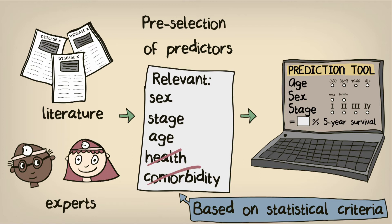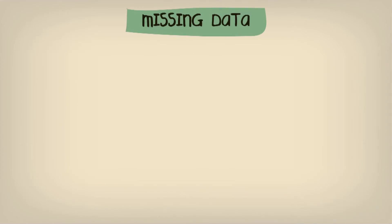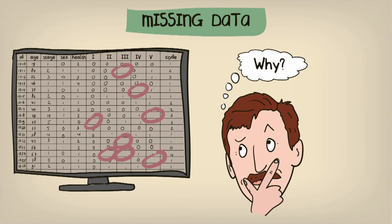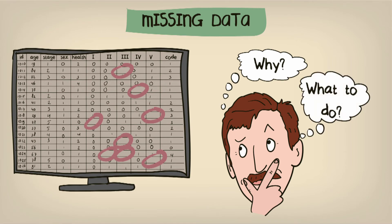Another important issue to consider is missing data. When viewing your data, you may find some information was not recorded for some patients during the follow-up period. When information is missing, it is vitally important to consider why the data is missing and what the most appropriate course of action is. Because prognostic research is longitudinal by nature and can sometimes span very long periods of time, missing information can be a big problem and should never be overlooked.